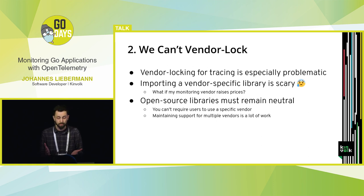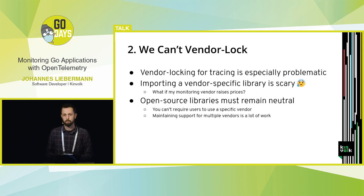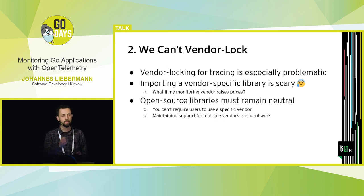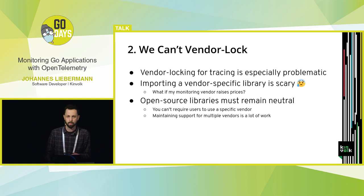Lastly, open source libraries must remain neutral. You wouldn't use a web framework that requires you to open a New Relic or Datadog account. Monitoring vendors typically use custom protocols to transmit metrics to the tracing backend, so maintaining support for Datadog, New Relic, Instana, AppDynamics — it's going to be a pain if you're just a maintainer of some library.